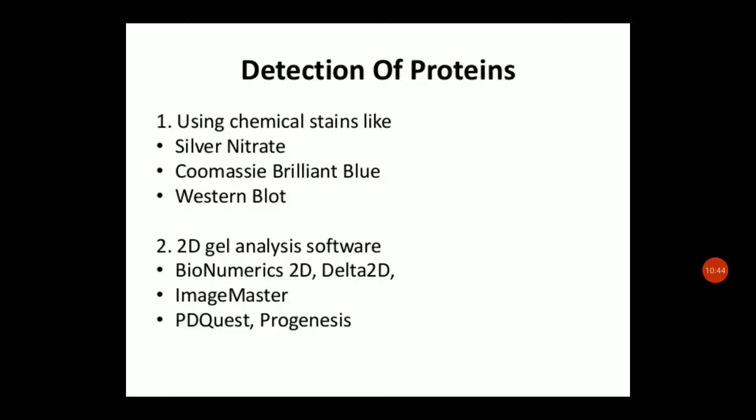After staining, the gel is visualized and the bands are analyzed using specialized software. The software tools used for two-dimensional gel analysis include Bionumerics 2D, Delta 2D, Image Master, PD Quest, and Progenesis, among others.